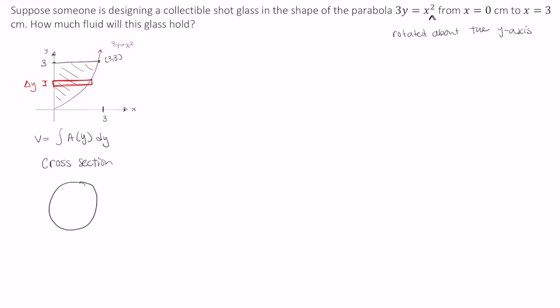Here's our cross-section, and here is its radius. If we're thinking of this as a shot glass, it's going to look like this. When we sliced our cross-section,